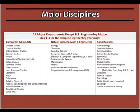Warren College requires you to complete courses in the two disciplines outside of your major — the humanities and fine arts, and the natural science, math and engineering disciplines — in order to give you breadth of study.